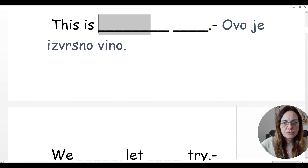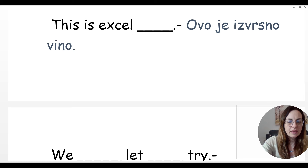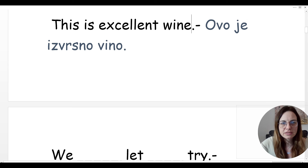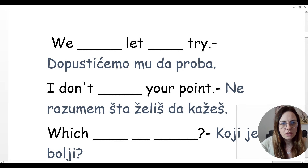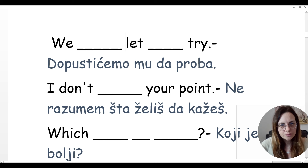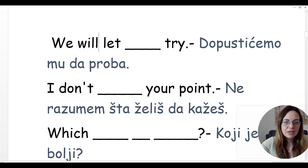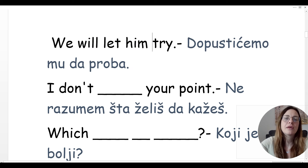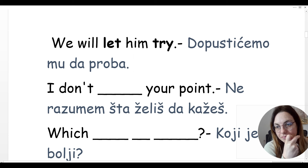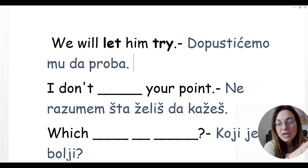Ovo je izvrsno vino — this is excellent wine. Dopustit ćemo mu da proba — znači dopustiti nekome da radi nešto je glagol 'let'. We will let him try. Znači koristimo infinitive glagola bez 'to' — ne kažemo 'to try', nego samo 'try'. Let me try. I will let you try. Will let him try.